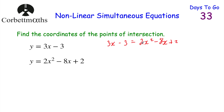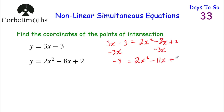Let's get it equal to 0. Take away 3x from both sides: minus 3 equals 2x squared minus 11x plus 2, because minus 8x minus 3x is minus 11x. Then add 3 to both sides: 0 equals 2x squared minus 11x plus 5. We've got a quadratic equal to 0 — let's see if we can factorise it.